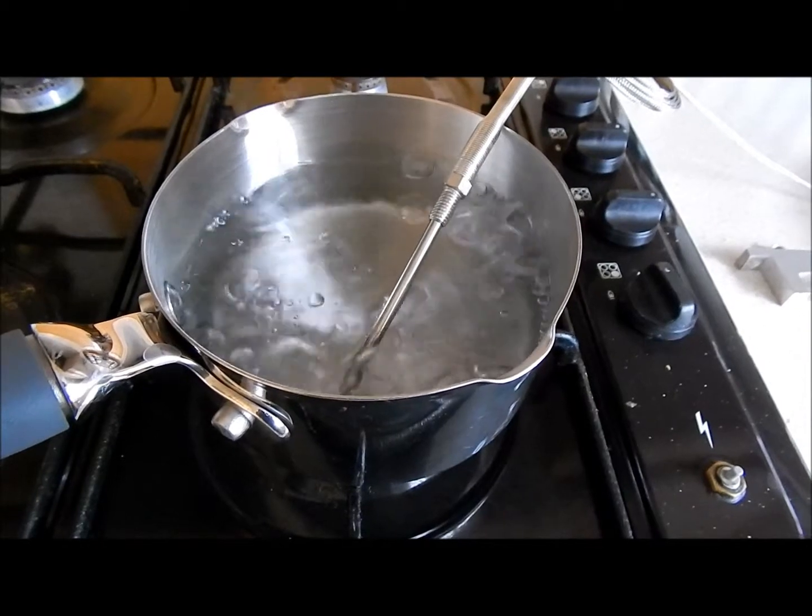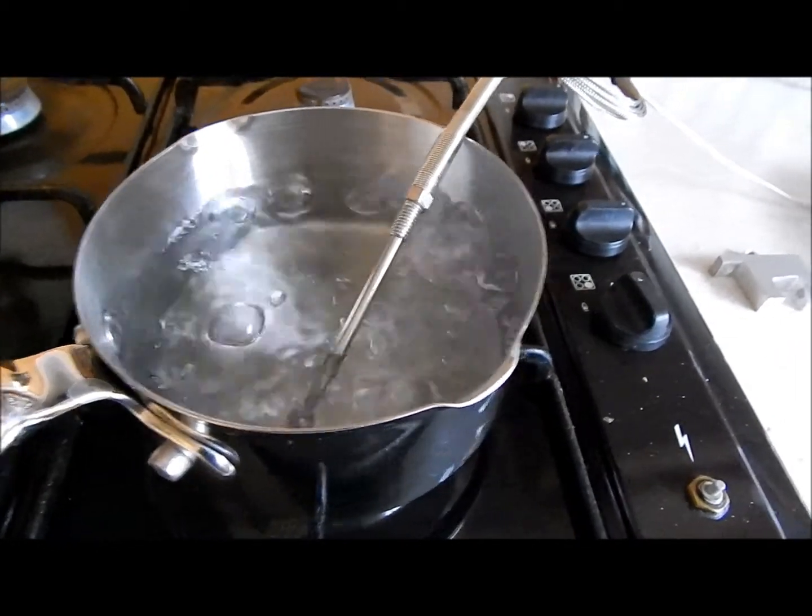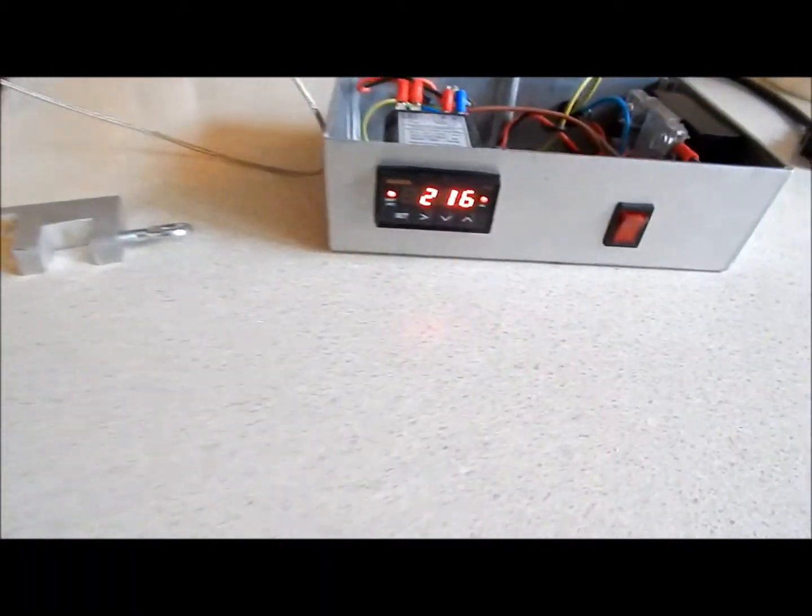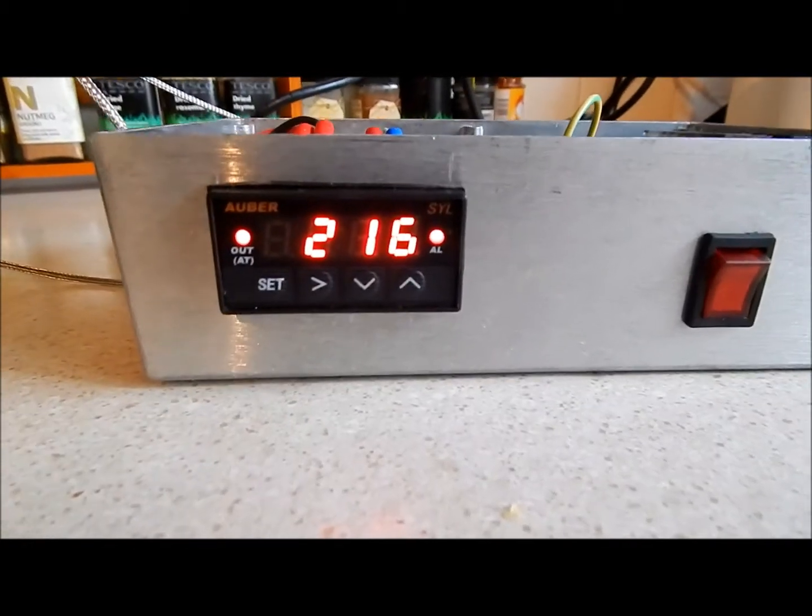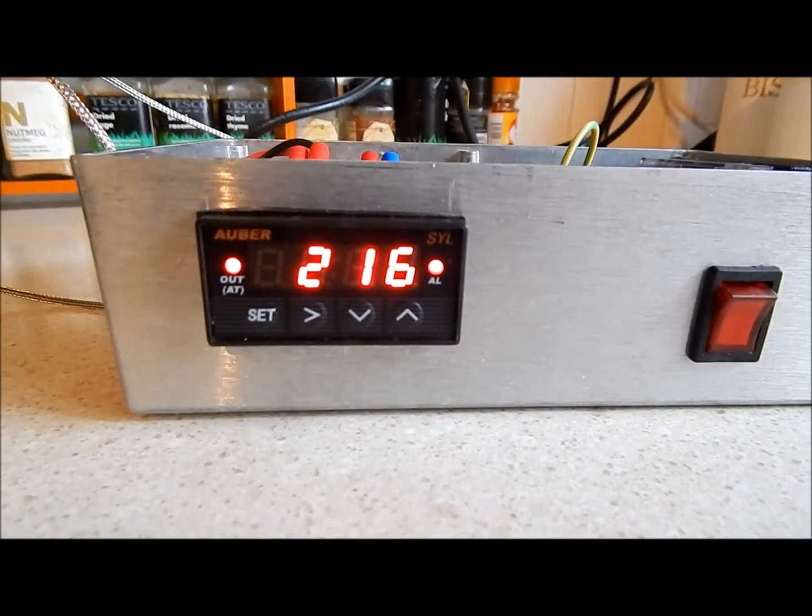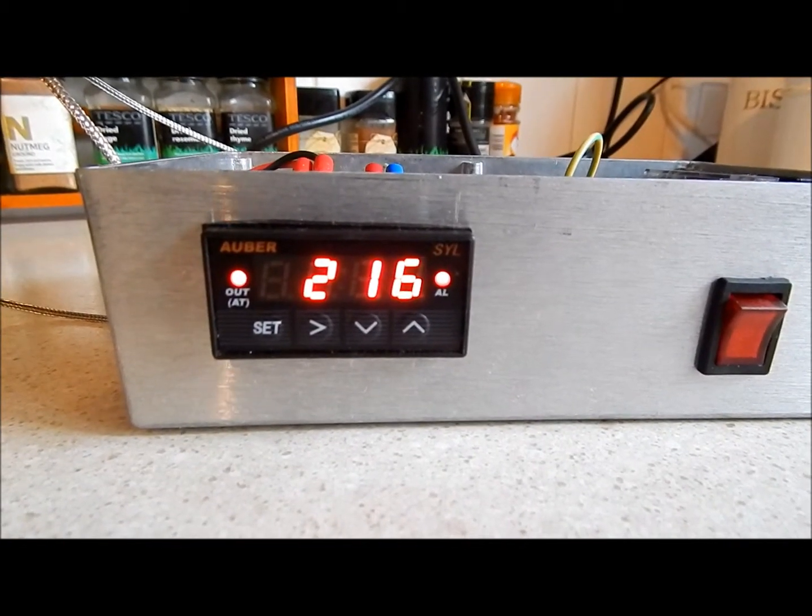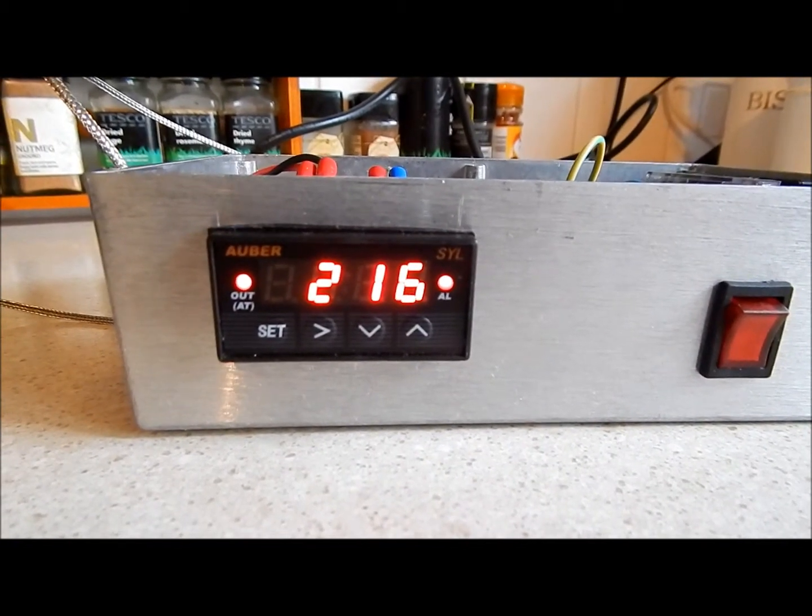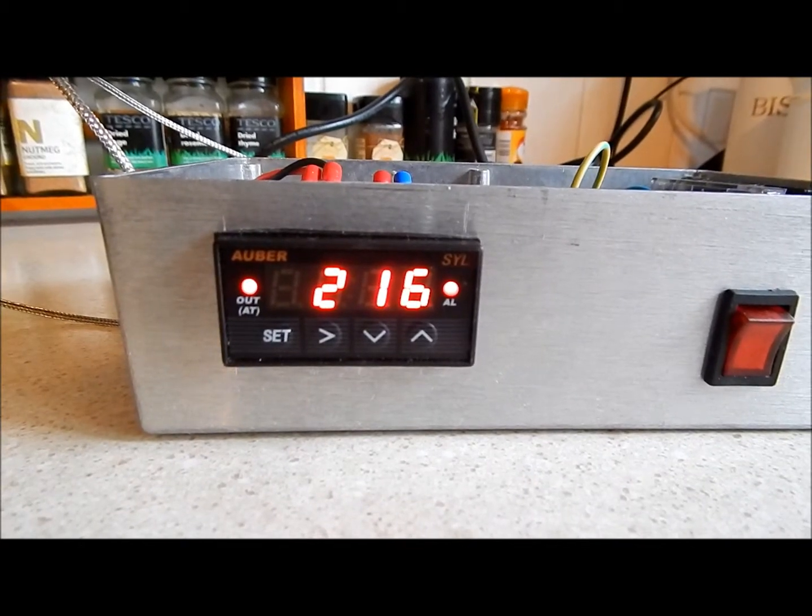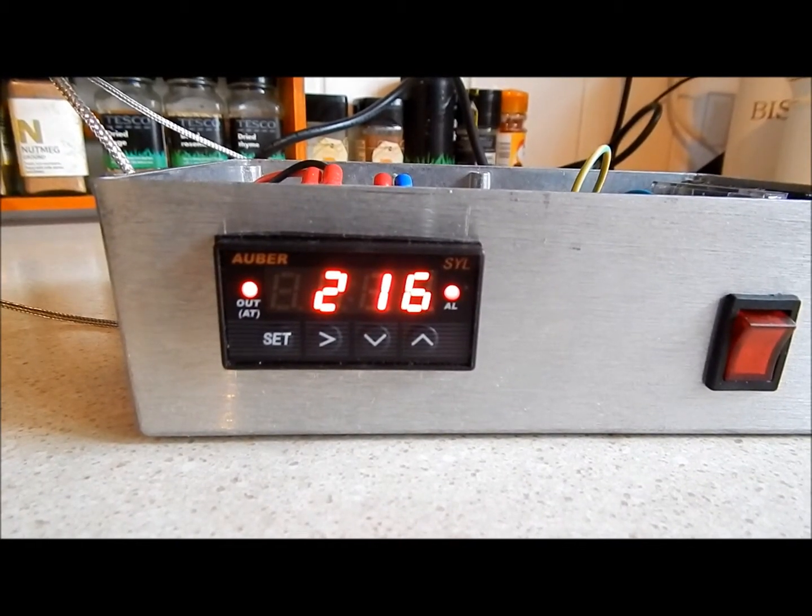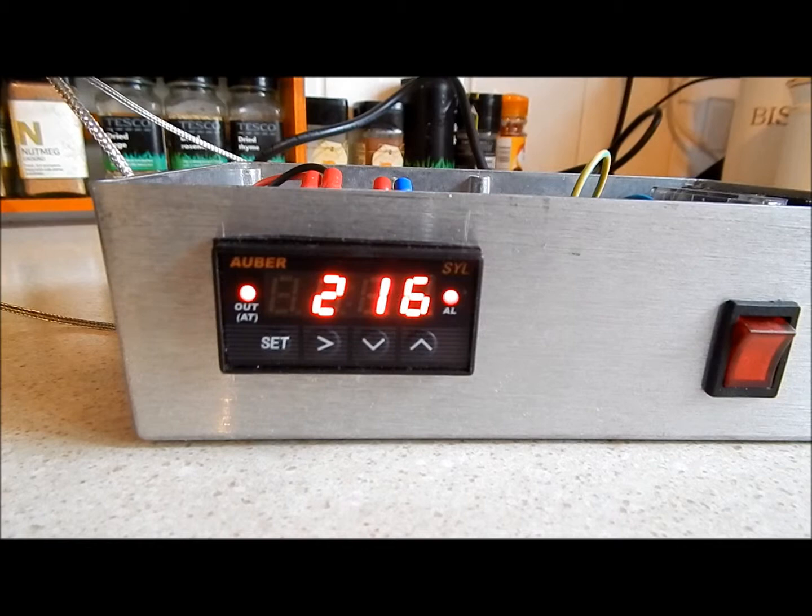Okay the water's boiling so let's see what we've got on the display. 216 should be 212 degrees F. That's four degrees out. Not bad for a £2.99 transducer though. And you can enter an offset into the program to take care of that.